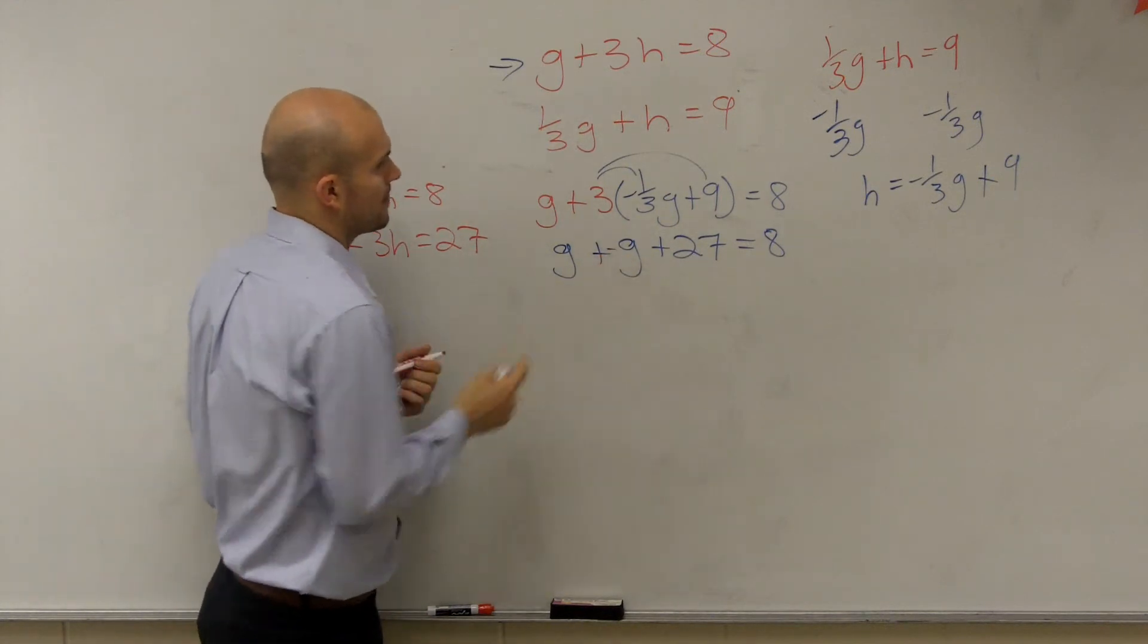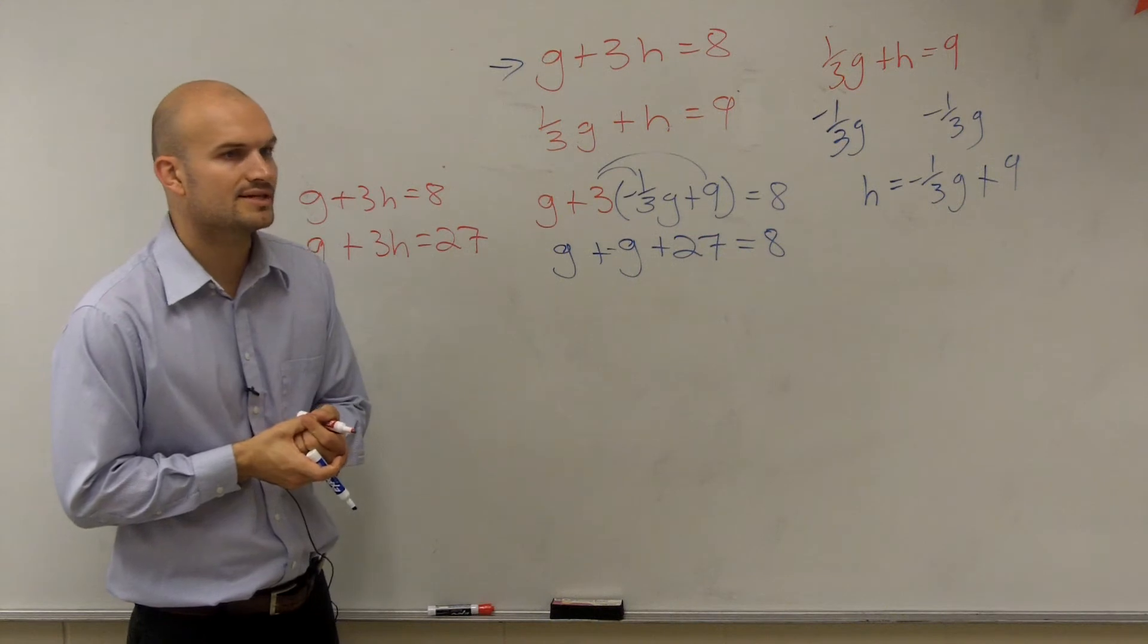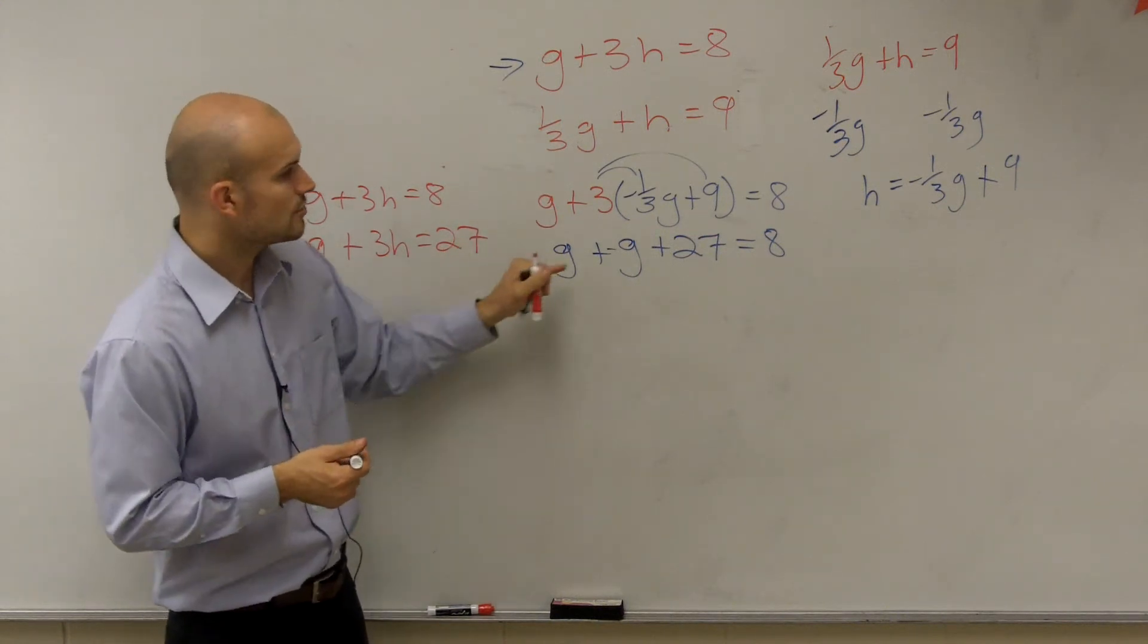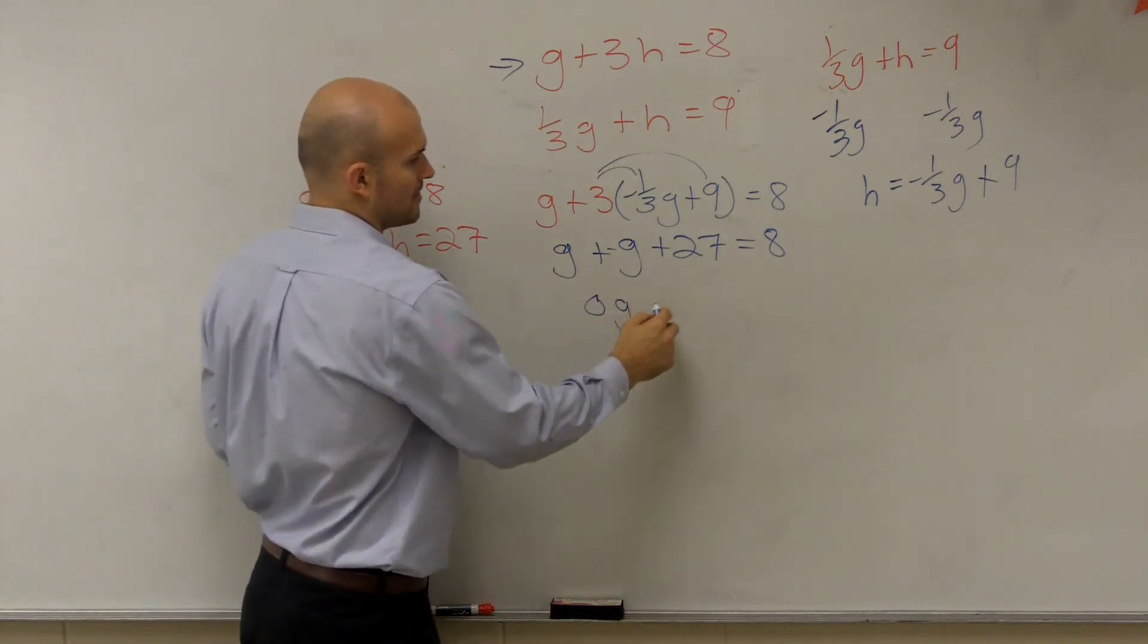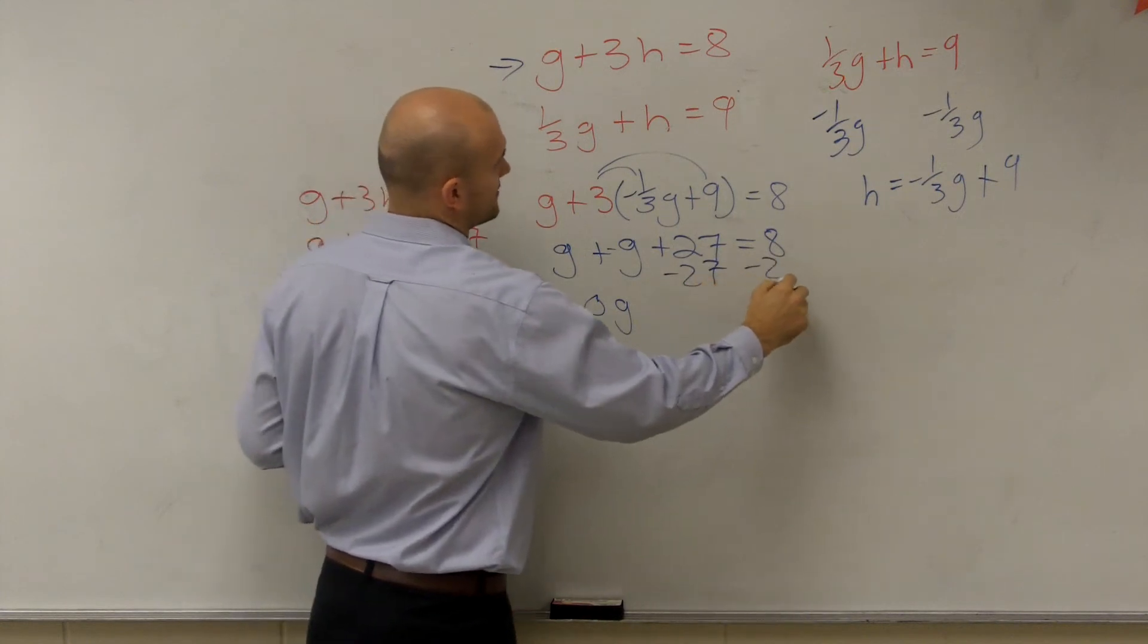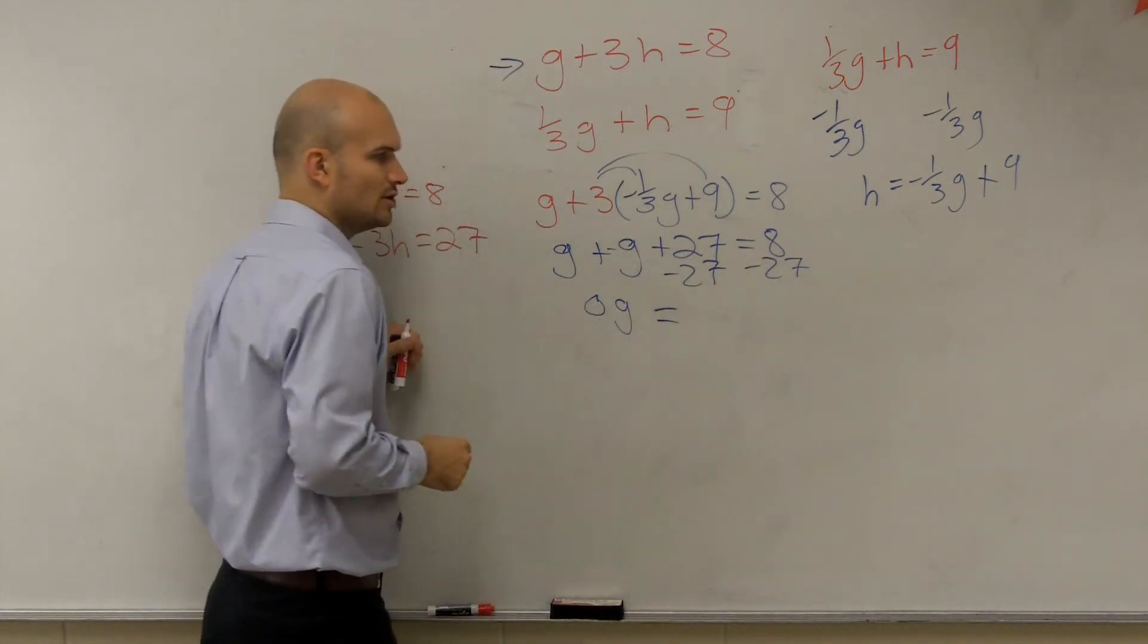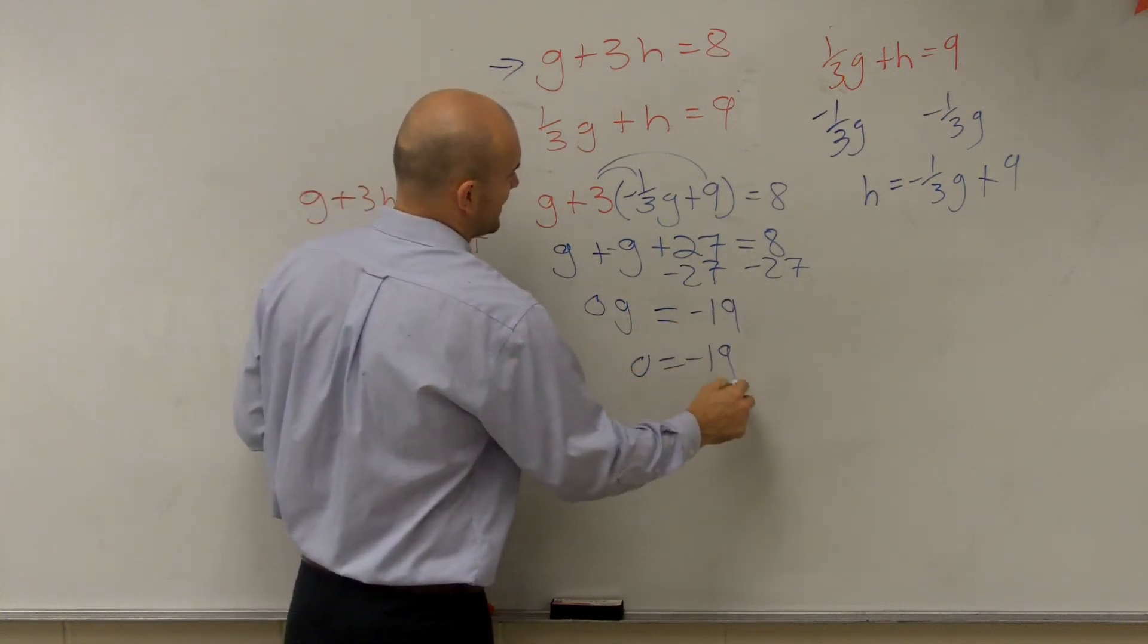Yeah, it's a negative, right? Thank you. So when we look at this, we end up getting 0g. Subtract the 27. So you have 0g equals negative 19. 0 equals negative 19. Is 0 ever going to equal negative 19? No.